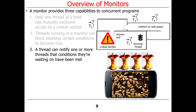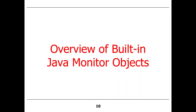So those are the three main things you get: mutual exclusion, and notification — which has two parts. One is to park yourself off to the side because things aren't going your way, and the other is to notify somebody after you're done, saying that thing you were waiting for might be true now. That should all sound very similar, because that's pretty much what you get with ReentrantLocks and Condition Objects.